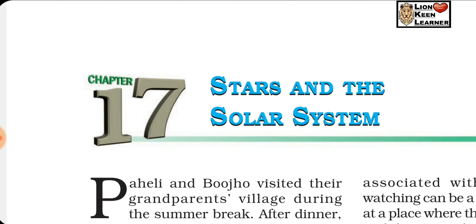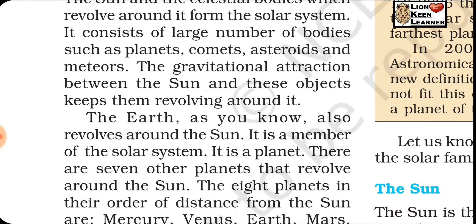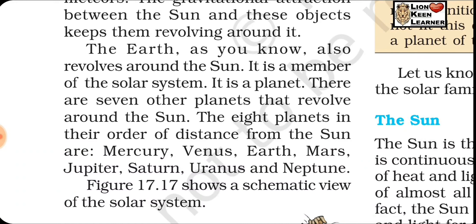The sun and the celestial bodies which revolve around it form the solar system. It consists of a large number of bodies such as planets, comets, asteroids, and meteoroids. The gravitational attraction between the sun and these objects keeps them revolving around it — the gravitational force of attraction binds them and the planets revolve around the sun.